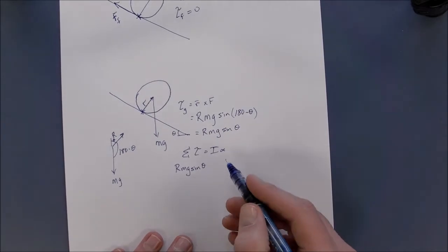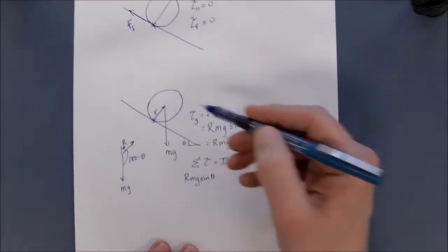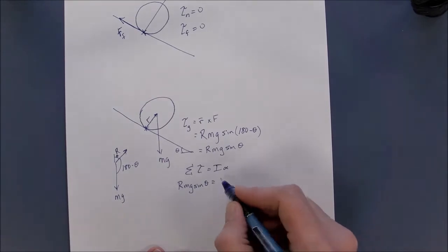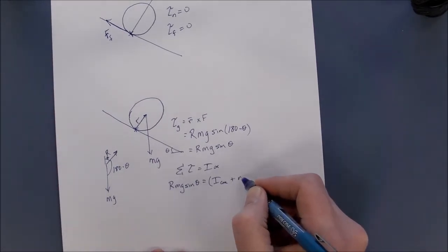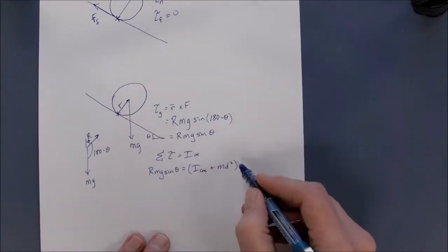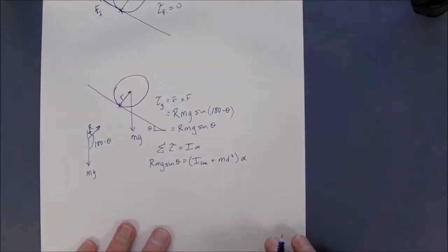I is because it's not rotating about the center of mass. We have to incorporate the parallel axis theorem, which is I_CM plus MD squared times alpha.